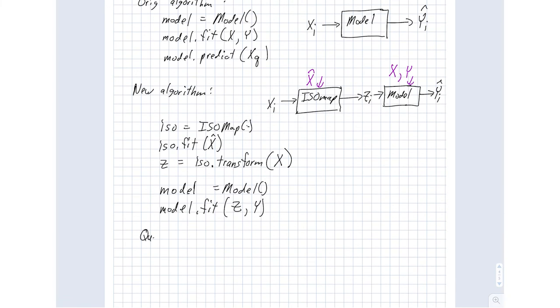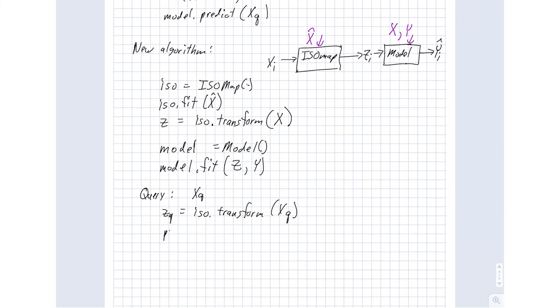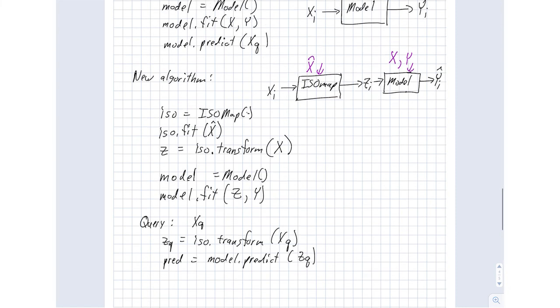To query, that becomes a two-step process. So we have some sort of a X queue. Z queue becomes an iso.transform. And then our prediction is just model.predict. And we hand it the Z queue as the input to our model now is in that compressed space. Okay, so that is the outline of the algorithm.